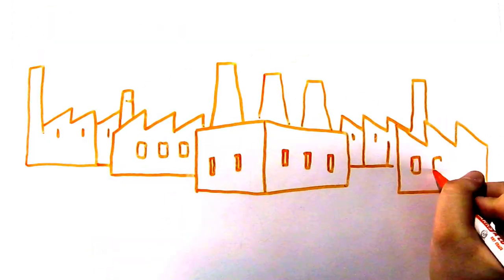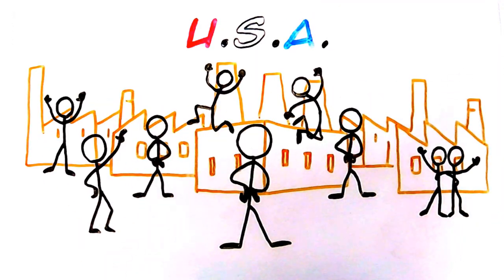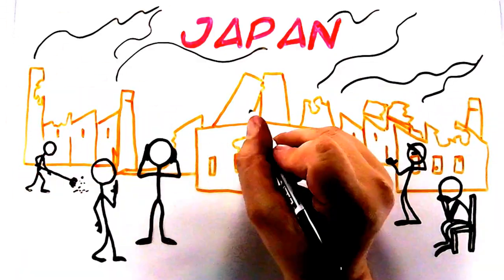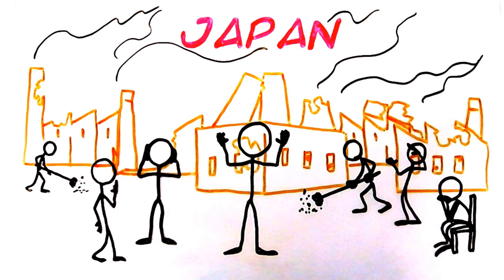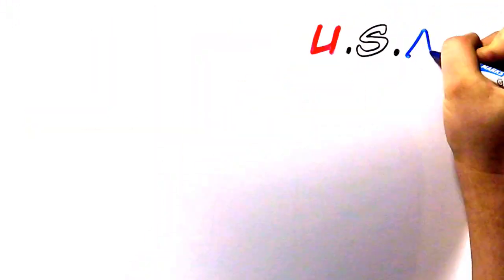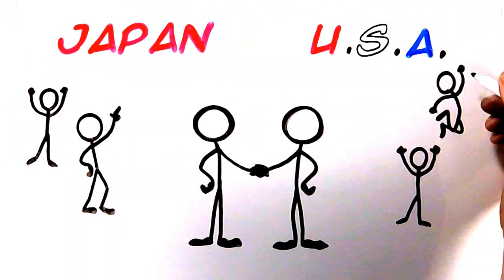The United States manufacturing was now the best in the world, and there seemed to be little motivation to continue improving when you're the best in the world. Japan, however, did not have the same post-war outlook. Their industrial infrastructure was severely damaged, and they needed to start fresh as quickly as possible. The United States wanted to help the Japanese by transforming them into a capitalist society so they would never have to fight them again.